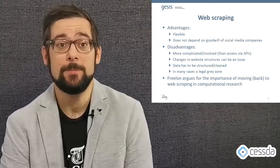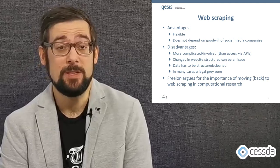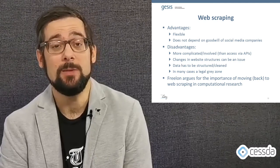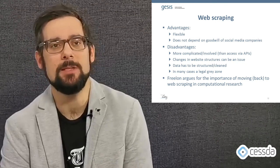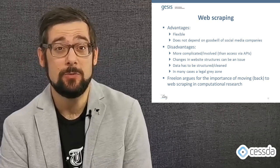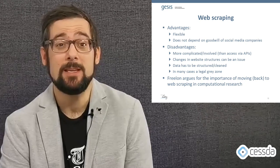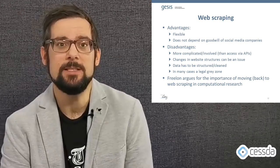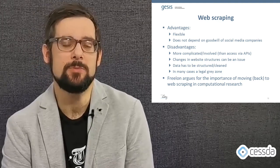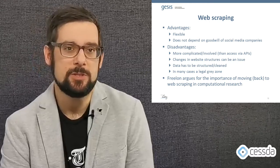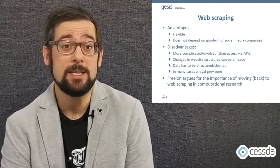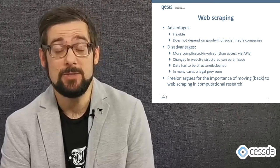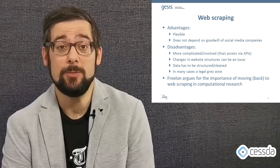The next option is web scraping. It's more flexible than the use of APIs and doesn't depend on the goodwill of companies that provide APIs. However, it's more difficult and involved, and not as easy to learn as using APIs. The data you get from web scraping is unstructured, and changes in website structure can be an issue for your methods. Web scraping can also be a legal gray zone — it's quite likely you might violate terms of services of websites. However, Dean Freeland argues it's important for researchers to know web scraping because APIs can be changed and closed at any time, and it's not a good idea to fully rely on APIs for your research.